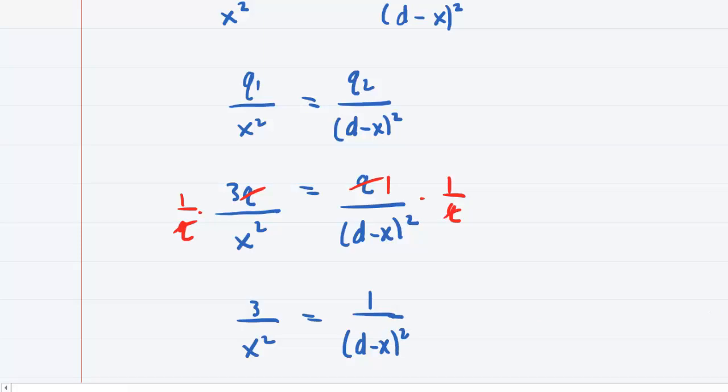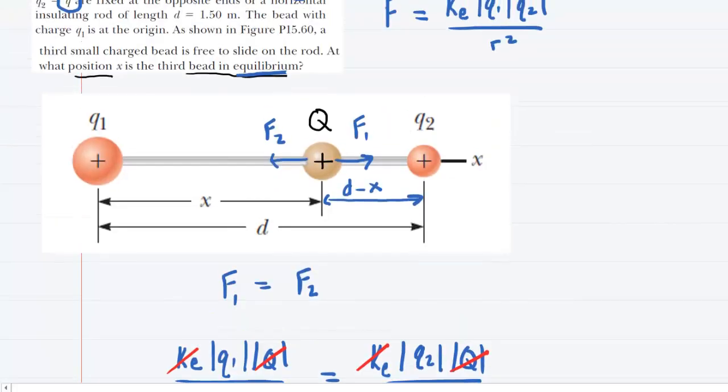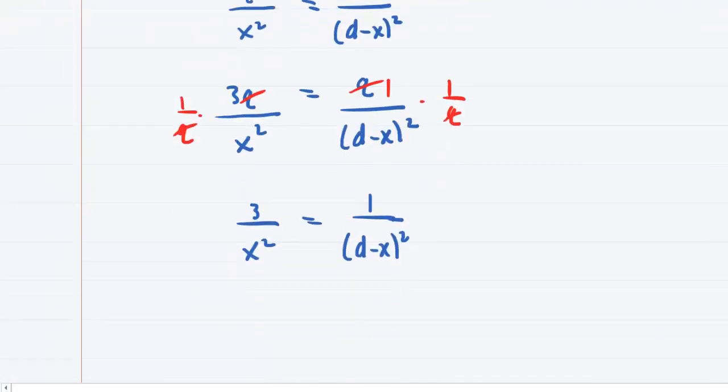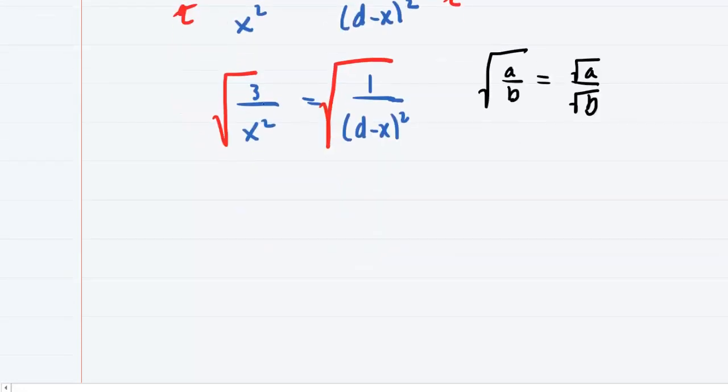Now we want to solve this equation for x. And it turns out the easiest thing to do is actually square root both sides of this equation. Now let me recall that when you have the square root of a fraction, that can be rewritten as the square root of the numerator divided by the square root of the denominator.